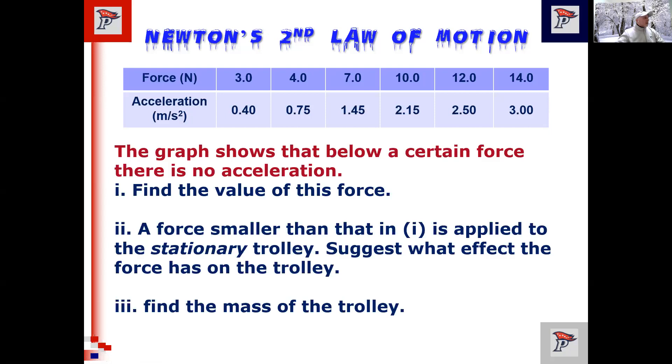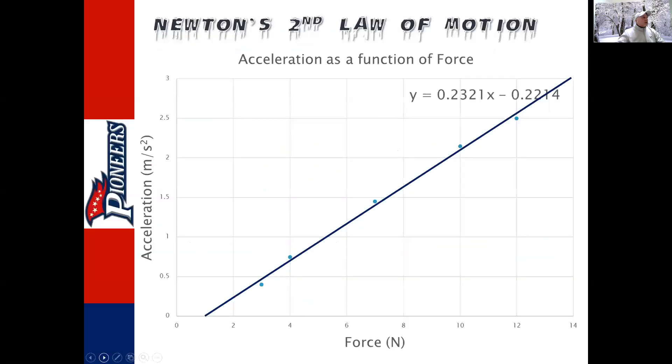Let me go to the graph. So find the value of this force. The graph shows that below a certain force, there's no acceleration. Where is there no acceleration? No acceleration. Yep, intercept. But normally we think y-intercept, because that's the y-intercept, which means it's down here somewhere. But we want this. So it's a guesstimate. Obviously, this is not great.